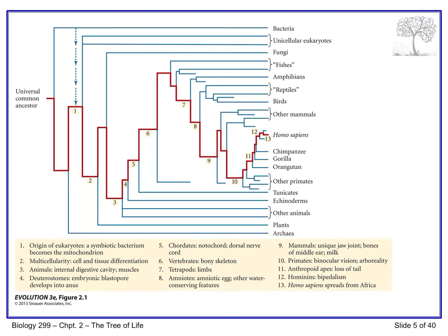Feature number one: the origin of eukaryotes — a symbiotic bacterium becomes the mitochondria. That differentiates all unicellular eukaryotes and plants from the archaea and bacteria, because that feature evolved after the archaea and bacteria split off. It wasn't present when they diverged; it evolved after that point. So only things that evolved later would have that characteristic.